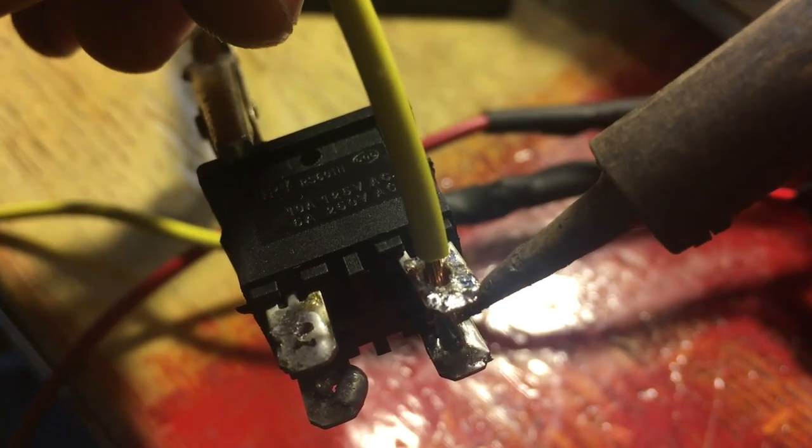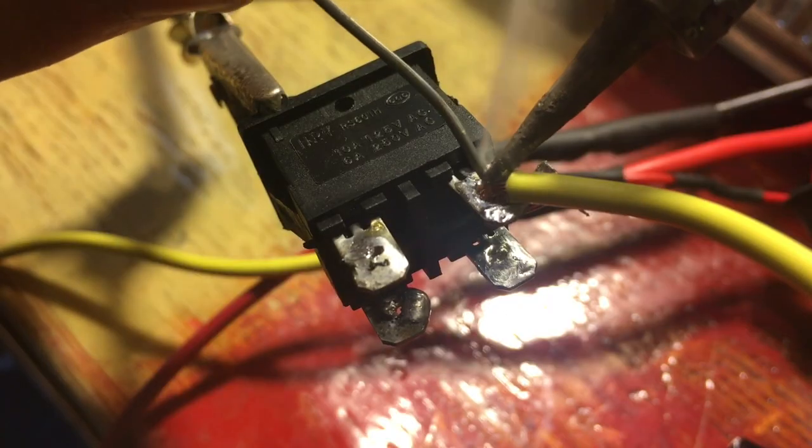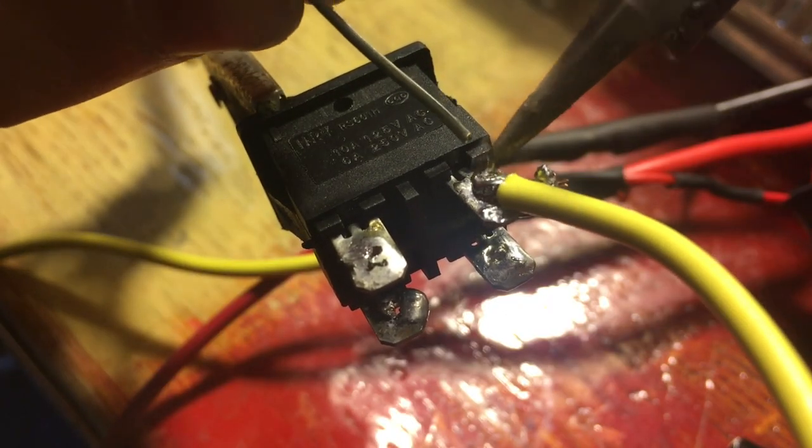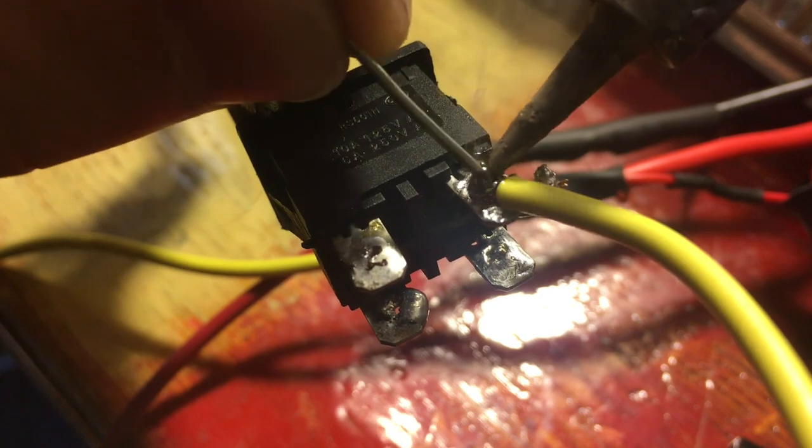I also had to solder the ventilation fan wires in line to the main 12-volt supply. For the main power switch, instead of just cutting off the ground or the positive 12 volts, I decided to use the switch to cut off both of them at the same time, just for added safety.